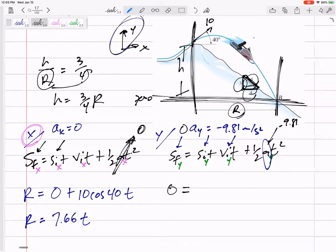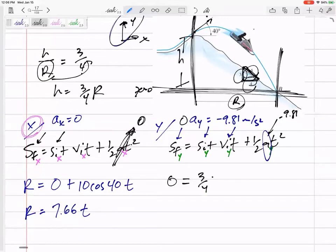But anyway, ask yourself, do I know the R? What is that R? That R is 3 fourths. It's a height. Do I know the height? What is that height? In this case, that height is 3 fourths R.